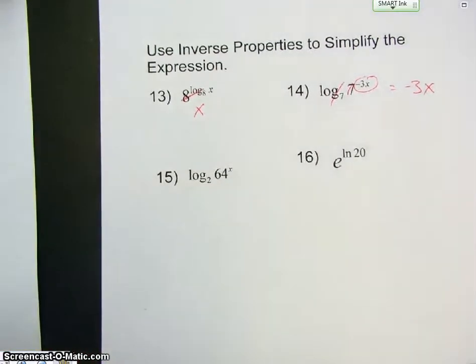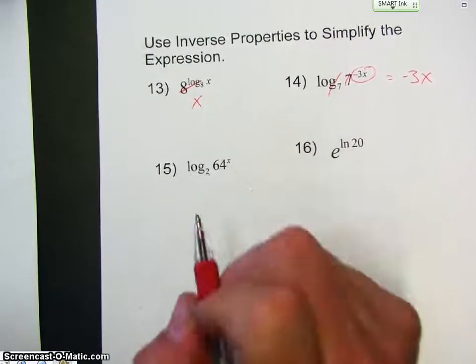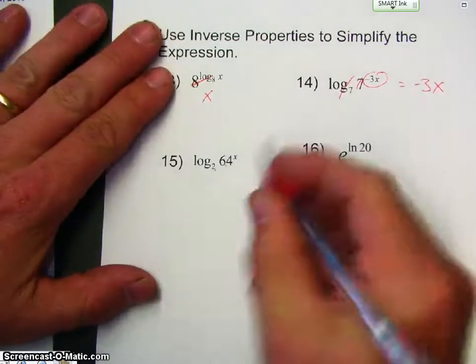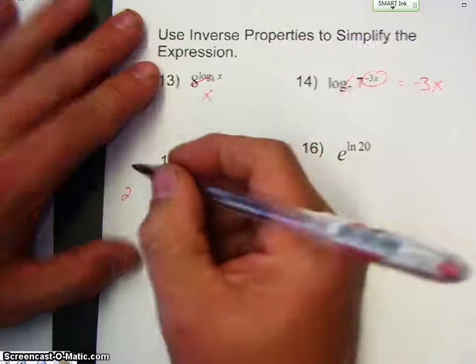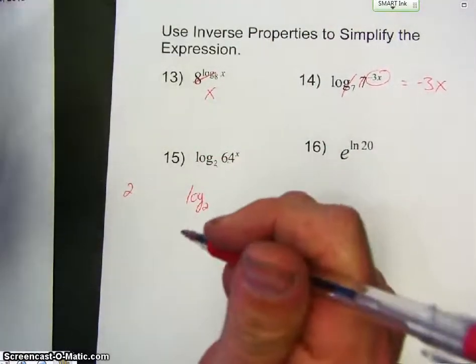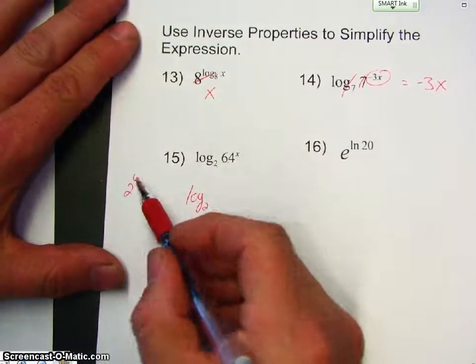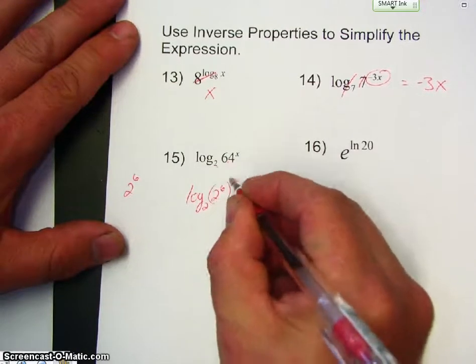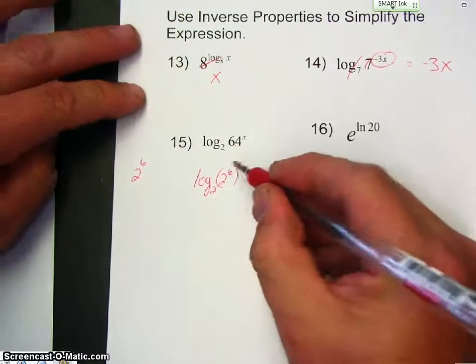Now, 15. These are not the same, so I can't cancel anything out, but I can take 64 and rewrite it on base 2. In other words, what I'm saying is 2 to what power gives me 64? So, 2 times 2 is 4, times 2 is 8, times 2 is 16, times 2 is 32, times 2 is 64. 2 to the 6 is 64, so I can rewrite this as 2 to the 6 to the x.